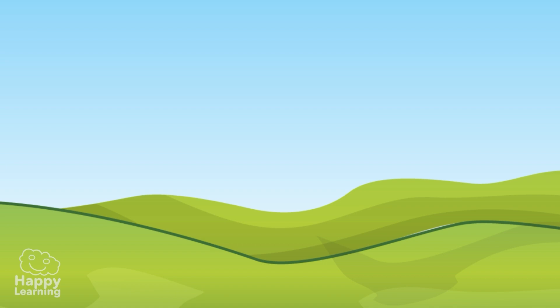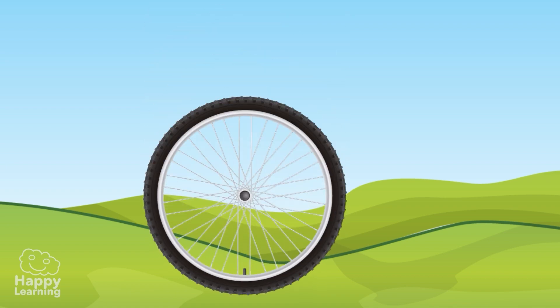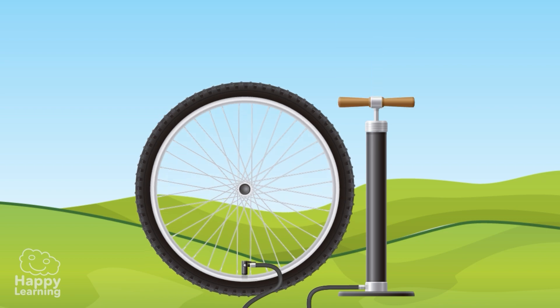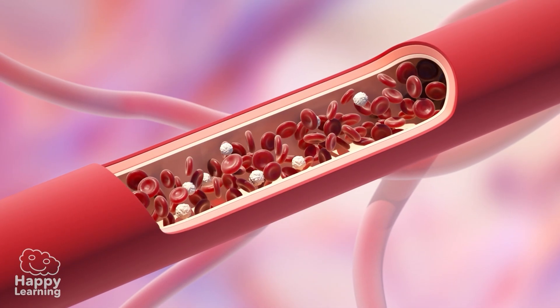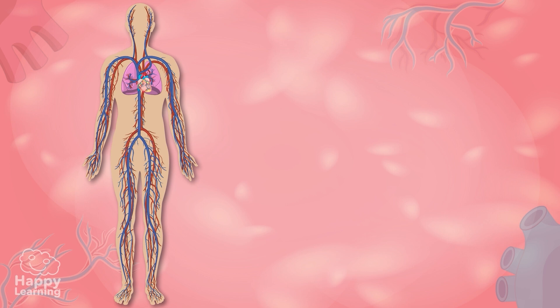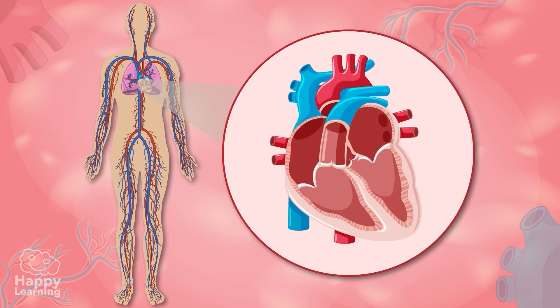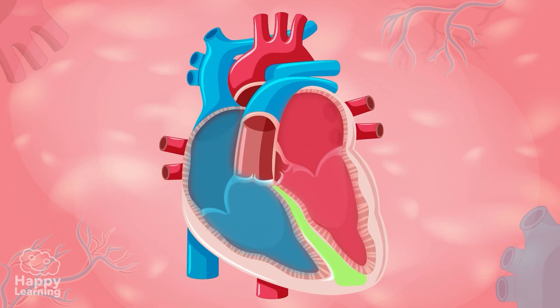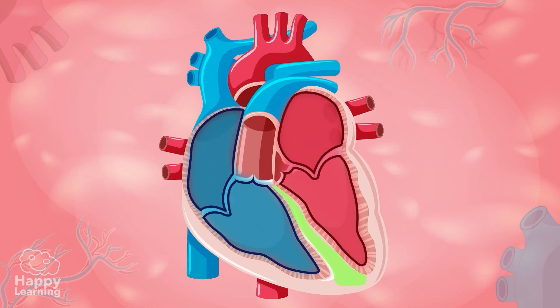It's like the pumps we use to inflate the wheels on our bikes — the only difference is that instead of pumping air, it pumps blood. The heart is divided into two parts: the right part and the left part, separated by a cellular wall so they are not connected internally.